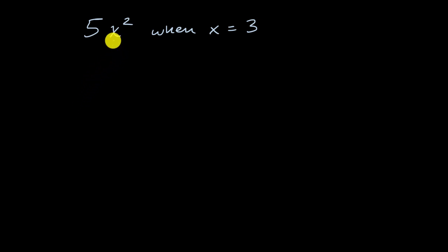All right, well, we just have to think about every place we see an x, we'll now replace it with a three. So this is going to be equivalent to five times, instead of x squared, it's going to be five times three squared.